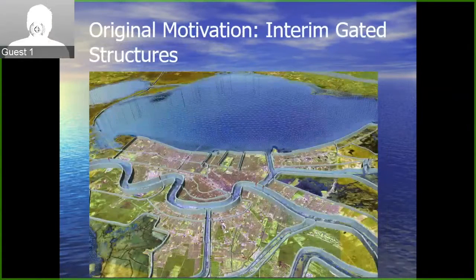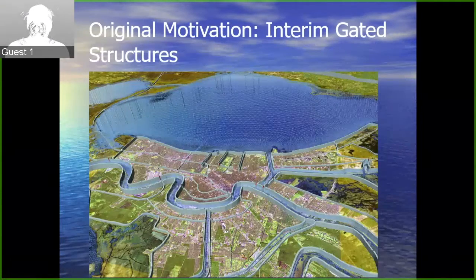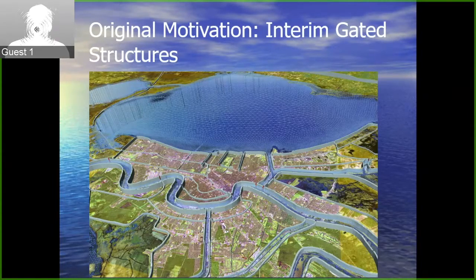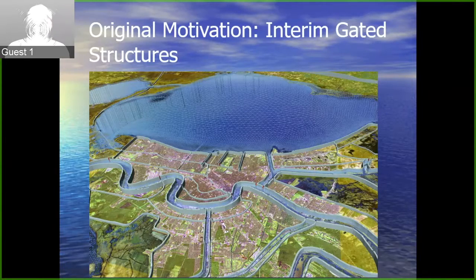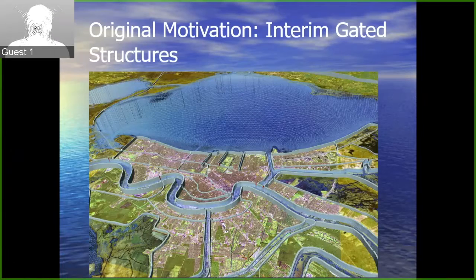The ADCIRC model was used up until Hurricane Katrina exclusively for design: flood risk, storm surge risk, levee design, and post-community planning. It was never used online as a storm was coming — it had never been used that way before.